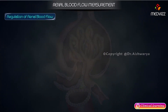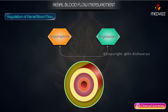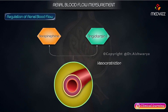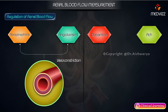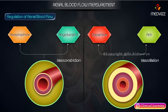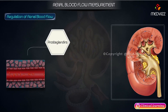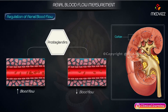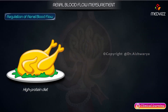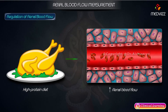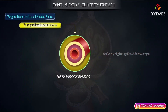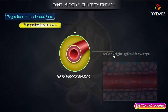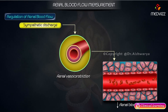Regulation of renal blood flow. Norepinephrine and angiotensin II can cause vasoconstriction, while dopamine and acetylcholine cause vasodilation. Prostaglandins increase blood flow in the renal cortex and decrease blood flow in the renal medulla. A high-protein diet can increase renal blood flow. Sympathetic discharge causes renal vasoconstriction, leading to a decrease in renal blood flow.